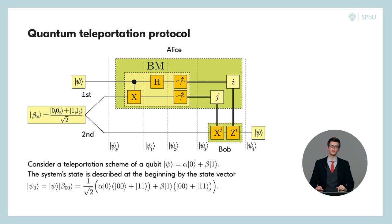So it's easy to show that at the beginning we have a superposition of the state alpha times 0 0 0 plus 0 1 1 and beta times 1 0 0 plus 1 1 1, and all of this is multiplied by a normalization factor 1 over square root of 2.